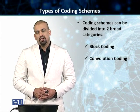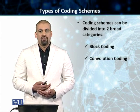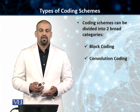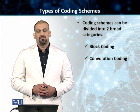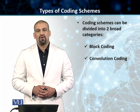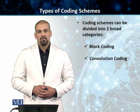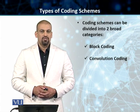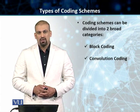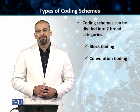Let's dive into the discussion of the different types of coding schemes that we have in our data communication systems. There are two broad categories that we divide our coding schemes into. The first category is called block coding schemes, and the second one is called convolution coding.